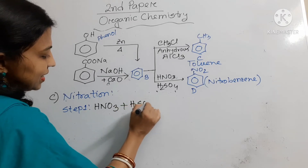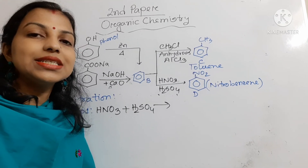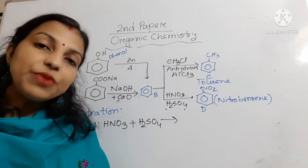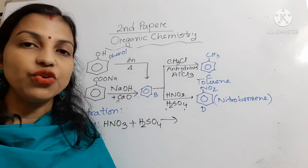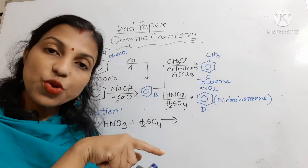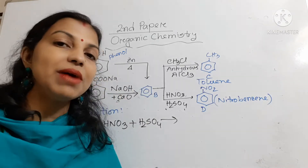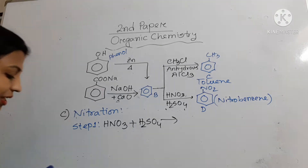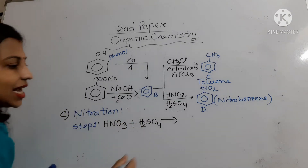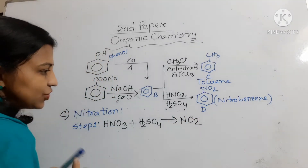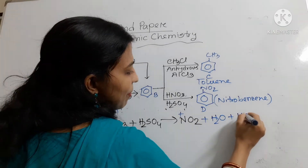Nitric acid and sulfuric acid are both acids, but here concentrated sulfuric acid is used. In the presence of concentrated sulfuric acid, nitric acid works as a base. It receives a proton from H2SO4, converting H2SO4 to bisulfate ion (HSO4-). The proton joins with the OH of nitric acid and forms water. In this way, the nitronium ion (NO2+) is formed. This nitronium ion works as the electrophile in this reaction, while HSO4- is also produced.